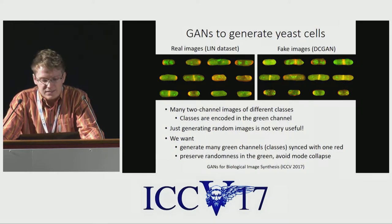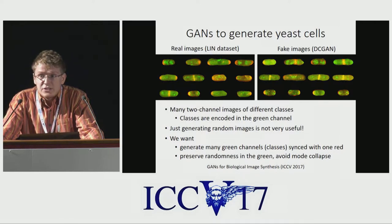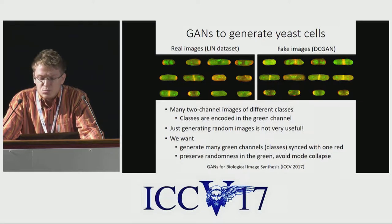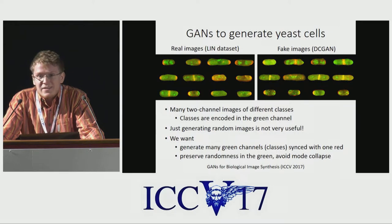If we apply GANs to such images, they simply work well and generate something that looks very real, even for experts. But are such generators useful? By useful I mean can they lead to new breakthroughs in biology? Well, apparently if you don't do anything else, then the answer is no, because biologists can already obtain a lot of real images like that and they don't want even more fake ones.